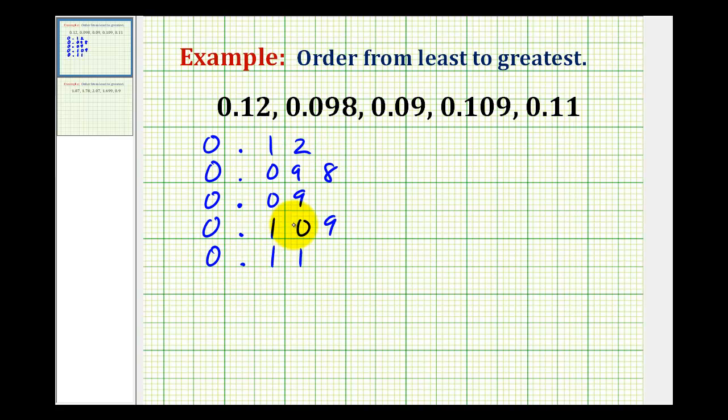Now notice that three of these decimals only have two digits to the right of the decimal and two of them have three digits to the right. So we can add another zero here, here, and here. And by doing this, it makes it much easier to compare these decimals. And by adding a zero, we're not changing the value of these decimals.